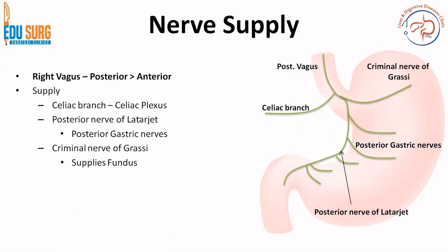The posterior vagus receives a lot of fibers from the right vagus and gives a celiac branch which supplies the celiac plexus, but it has no hepatic branch. It also gives the posterior nerve of Latarjet which supplies the posterior gastric nerves. Very important from surgery as well as exam point of view: there is a supply to the fundus from the posterior vagus which is known as the criminal nerve of Grassi. It is known as the criminal nerve of Grassi because this nerve arises separately from the rest of the nerves of Latarjet and gastric nerves, and if this nerve is missed during surgery, the benefit of the vagotomy will not be complete if you are doing a selective vagotomy.